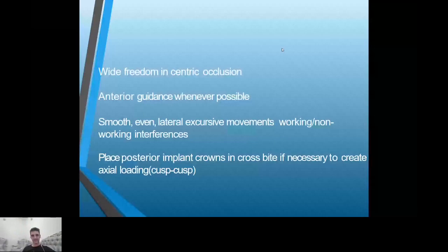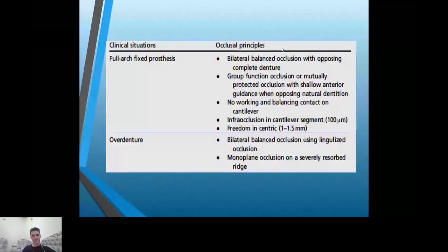In the principles of occlusion in full arch fixed prostheses, we use bilateral balanced occlusion if we have no lateral force. Splinting of implants — connecting more than one implant in a single prosthesis — distributes force across multiple implants. There should be no working and balancing contacts on the cantilever. Whenever you can decrease or minimize the cantilever in prostheses, it is better. If a cantilever exists, it must be less than 100 microns from another implant.